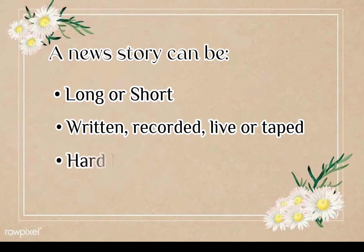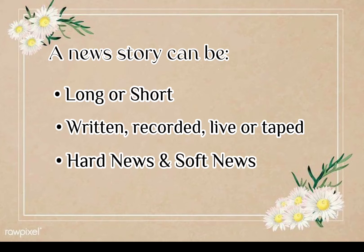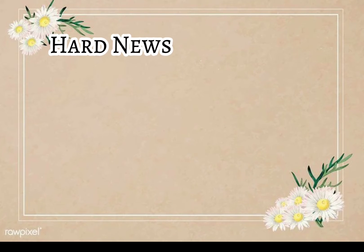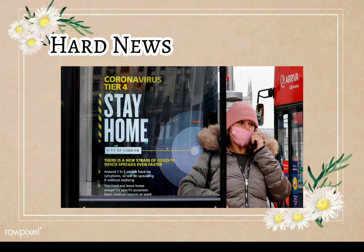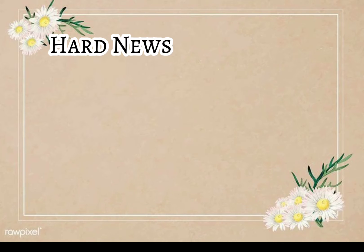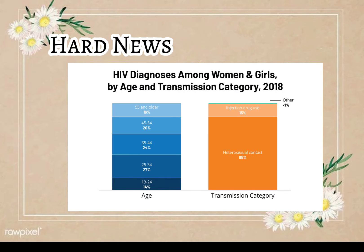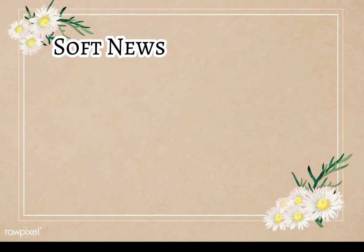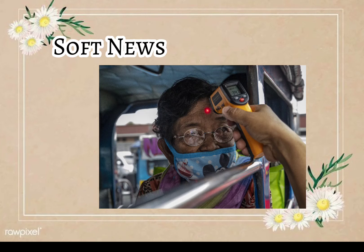Hard news is a type of story which is full of important facts and news items. Two examples are an article on the alarming news trend of coronavirus, and the alarming rise of HIV cases in heterosexual women. Soft news, on the other hand, focuses on the personal, more human side of a news event or situation. An example of a soft news or feature article would be a story about a senior citizen who battles against the virus.